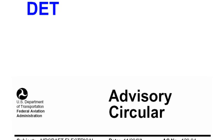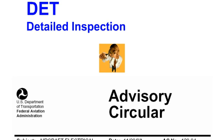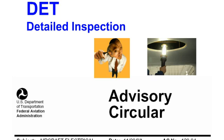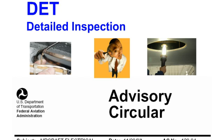A DET, which is an intensive, detailed examination of a specific item, installation, or assembly. This level of inspection may require the removal of access panels, drip shields, or the moving of components.